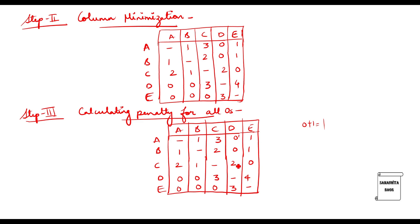In the second row, there is one zero; corresponding column minimum is zero and row minimum is one — summation is one. Third row zero: column minimum is one, row minimum is one — summation is two. In the fourth row, the zero has column minimum zero and row minimum zero — summation is zero. Several other zeros also give summation zero, and one zero gives zero plus two, which is two. I have now calculated the penalty for each zero.